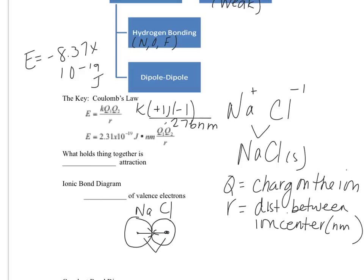So what does this tell us? It tells us that the ion pair has a lower energy than the separated ions. This makes sense, because when things react, the overall system wants to achieve the lowest possible energy. What holds this together is electrostatic attraction.